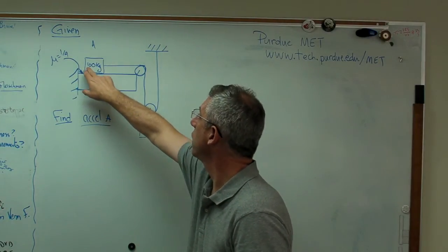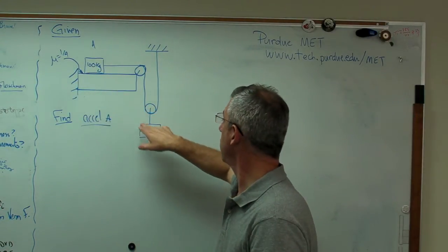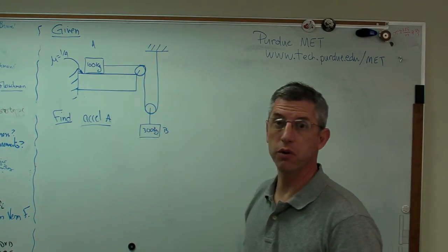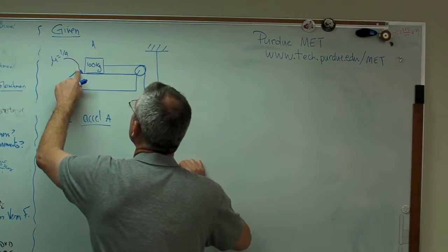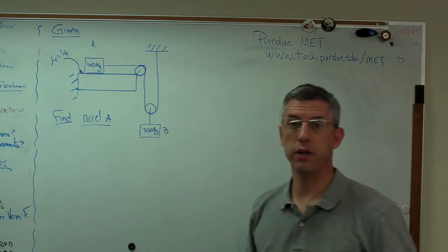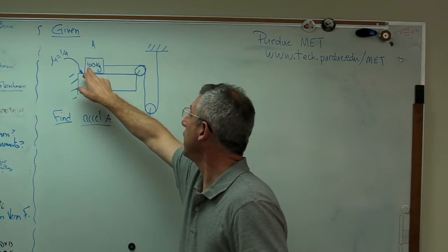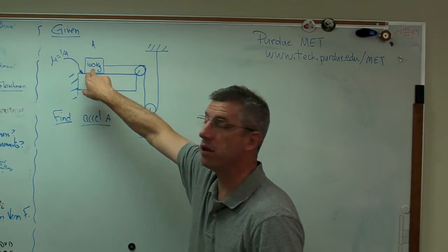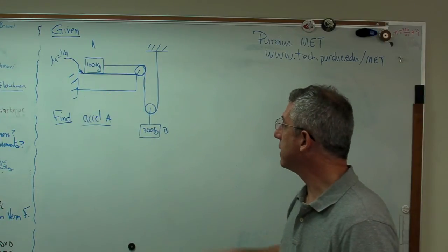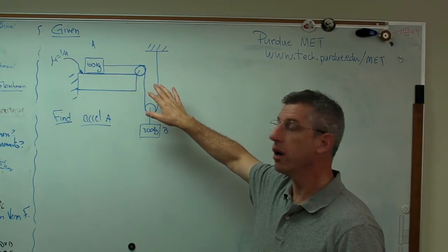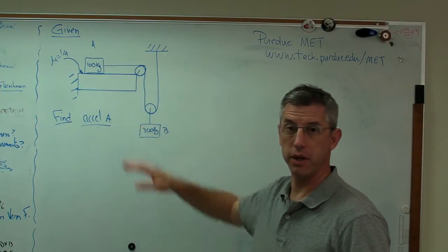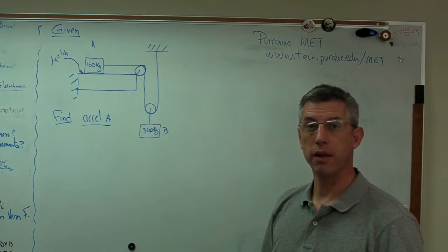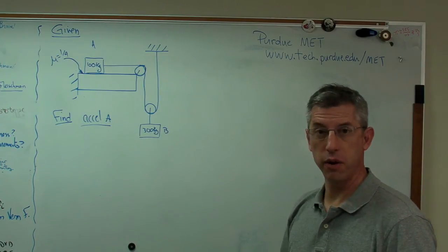What we've got here is a surface with a 100 kilogram weight on it and a 300 kilogram weight down here. They're joined by a rope that goes over two pulleys. There's a coefficient of friction between weight A and that surface of one quarter. What we're trying to do is find the acceleration of A. Now it's easy to get this wrong by getting signs mixed up. I'm going to show you a process here that I think is general enough that it will work every time.